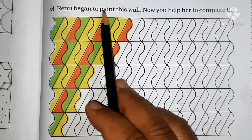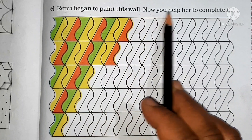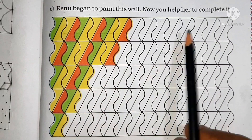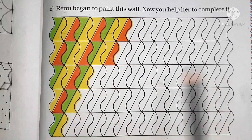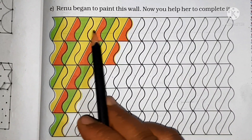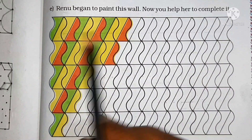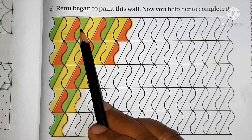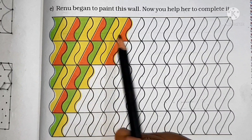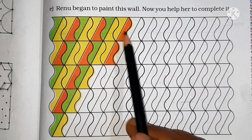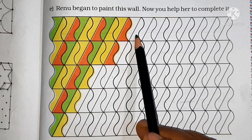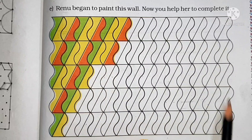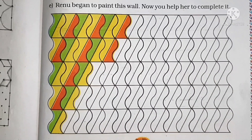Renu began to paint this wall — now you help her to complete it. You can see it is incomplete. Now look at the color pattern combination — it follows a certain pattern: green, yellow, yellow, orange. Green, yellow, yellow, orange. Green, yellow, yellow. So what will be the next? Green, yellow, yellow, orange. In that way, children, you will follow the pattern and complete this color on the wall.